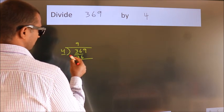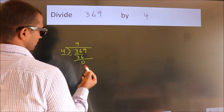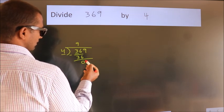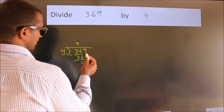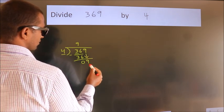Now we should subtract. We get 0. After this, bring down the beside number. So 9 down, so 9.